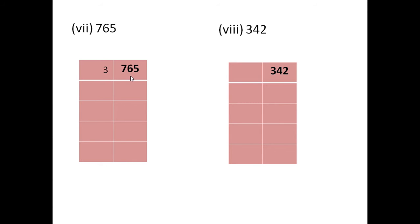So, we will take 3 as the factor of 765. Divide 765 by 3, you will get 255. Here again, if you see the sum of the digits, 2 plus 5 plus 5 is 12. 12 is divisible by 3. Therefore, 255 is also divisible by 3. Again we will take 3 as the factor of 255. When you divide 255 by 3, you will get 85.